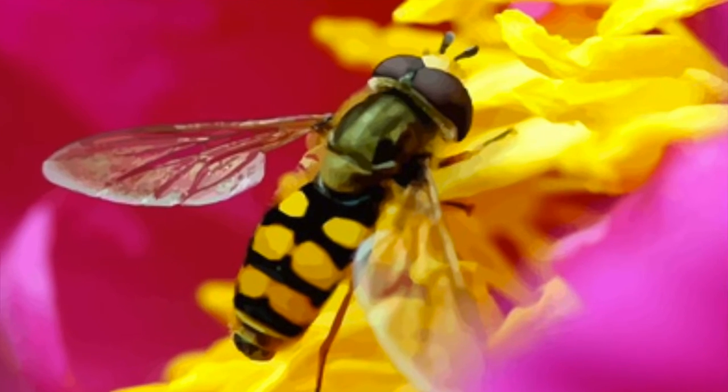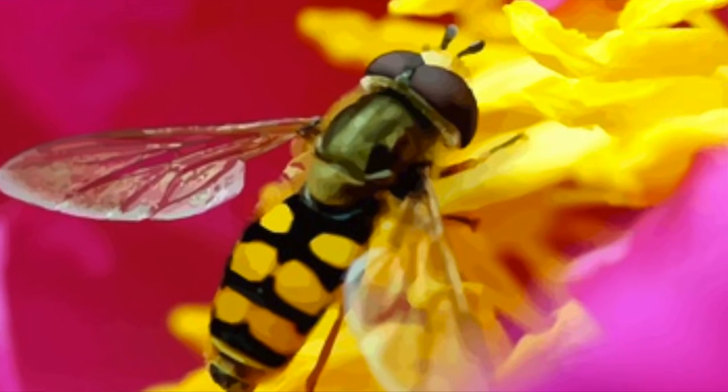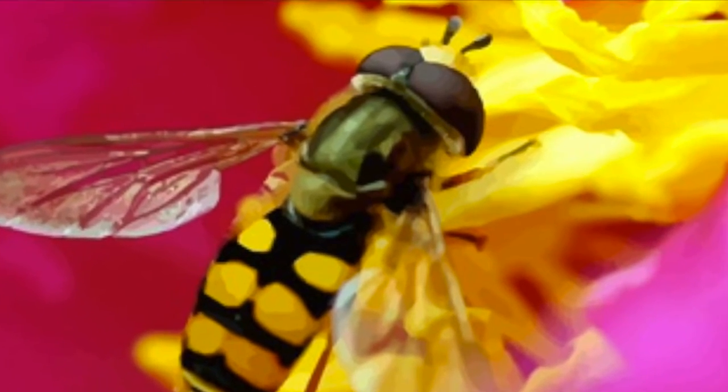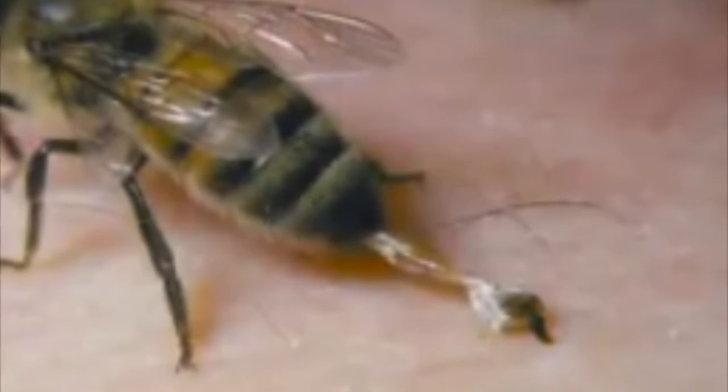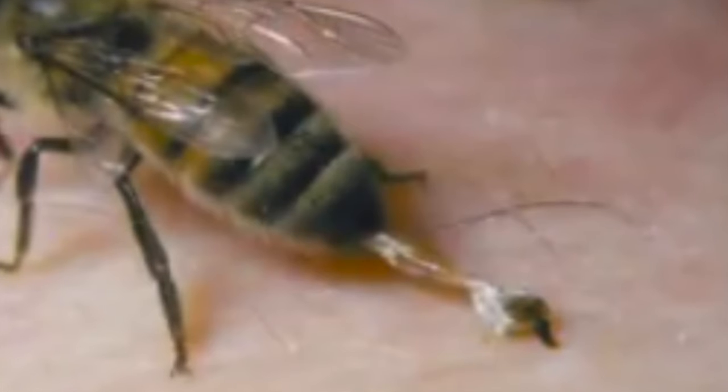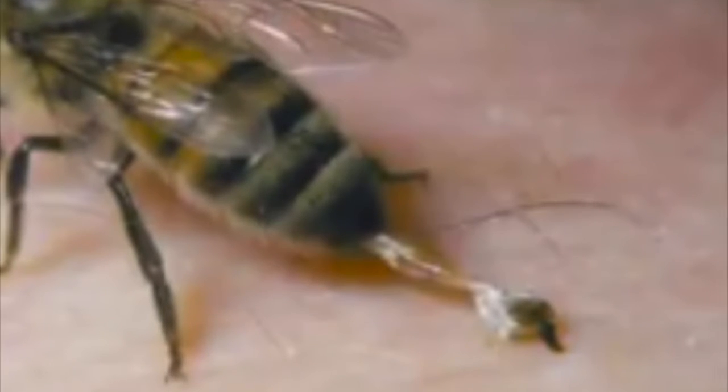But what does this look like in the real world? Some species of bees sacrifice themselves for others. If an enemy invades the nest, a worker may sting them to defend the colony but dies in the process. Their direct reproductive capability is lost, but if their siblings survive to reproduce, their genes stand a good chance of surviving on into the next generation.